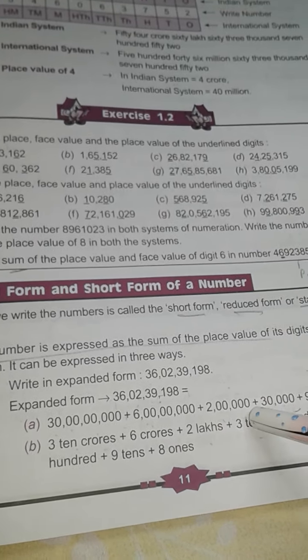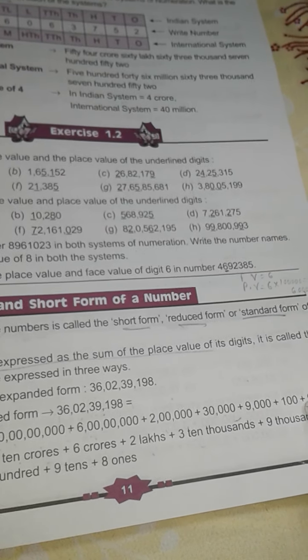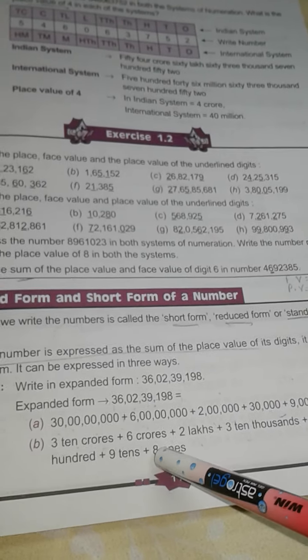Then 2 lakh, 30,000, 9,100, plus 90, plus 8. Another way is like this: